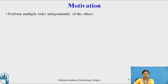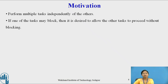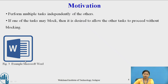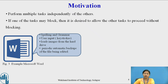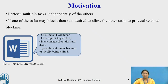Let us see the motivation behind threads. A thread can perform multiple tasks independently of others. If one task blocks, it is desired to allow other tasks to proceed without blocking. For example, consider Microsoft Word as a single process that performs multiple tasks: one thread checks spelling and grammar while the user is giving input via keystrokes, another thread takes user input, a third thread may load images from the hard drive, and a fourth thread keeps a periodic automatic backup of the file being edited. So here we have a single process — Microsoft Word — along with four different threads.